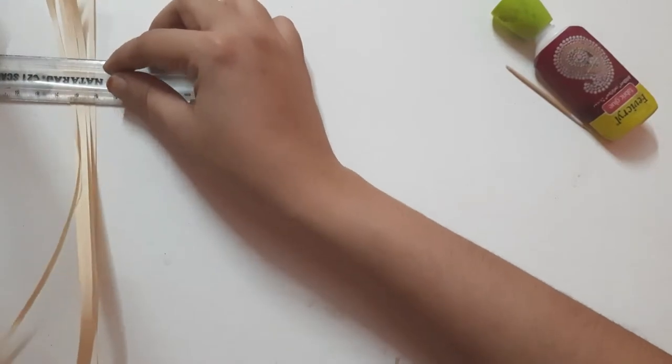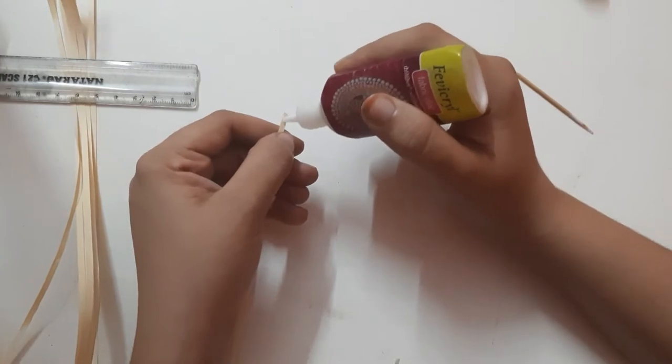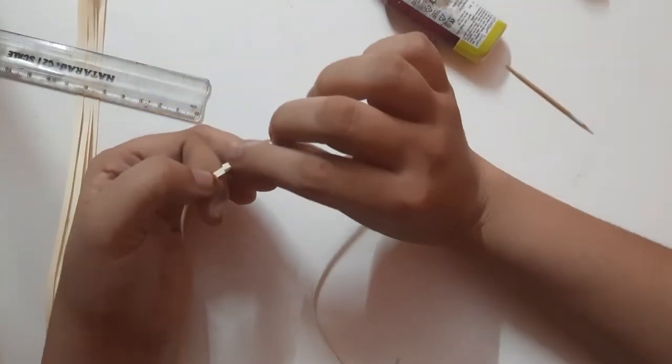Apply glue on the one end and attach the another quilling paper as I shown.